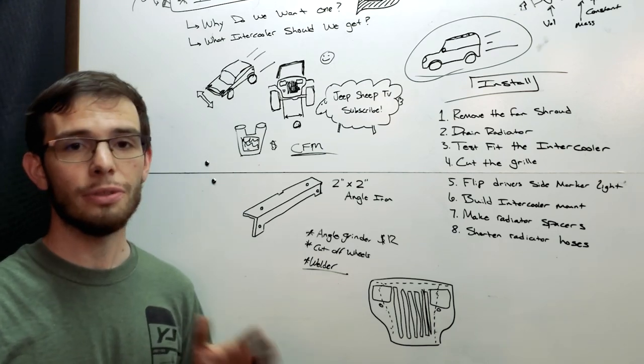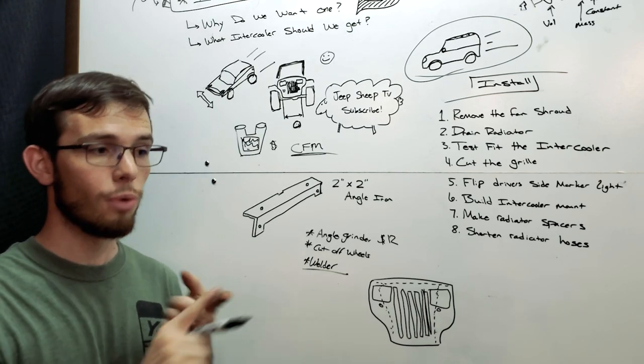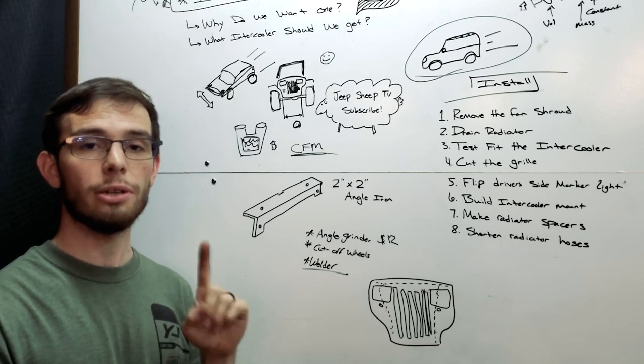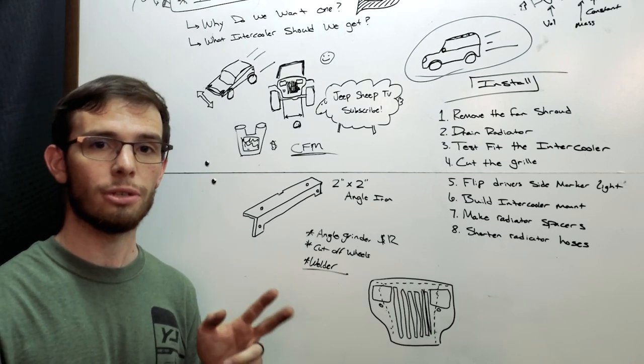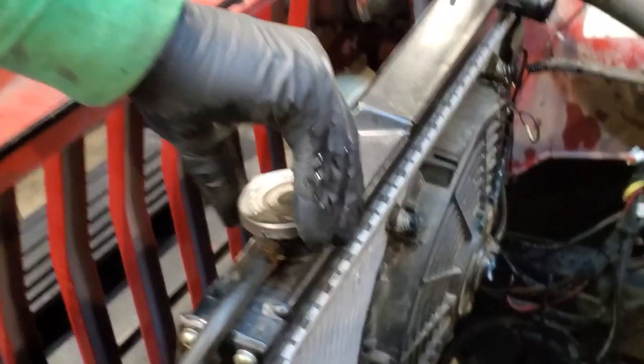And with this modification, there's two things that should still work. One, you should still be able to use your fan shroud if you cut it. And two, you can definitely use a clutch fan if you're still running a clutch fan. Then you're going to want to drain your radiator so you can remove it, get it out of there. It's just going to be in the way.